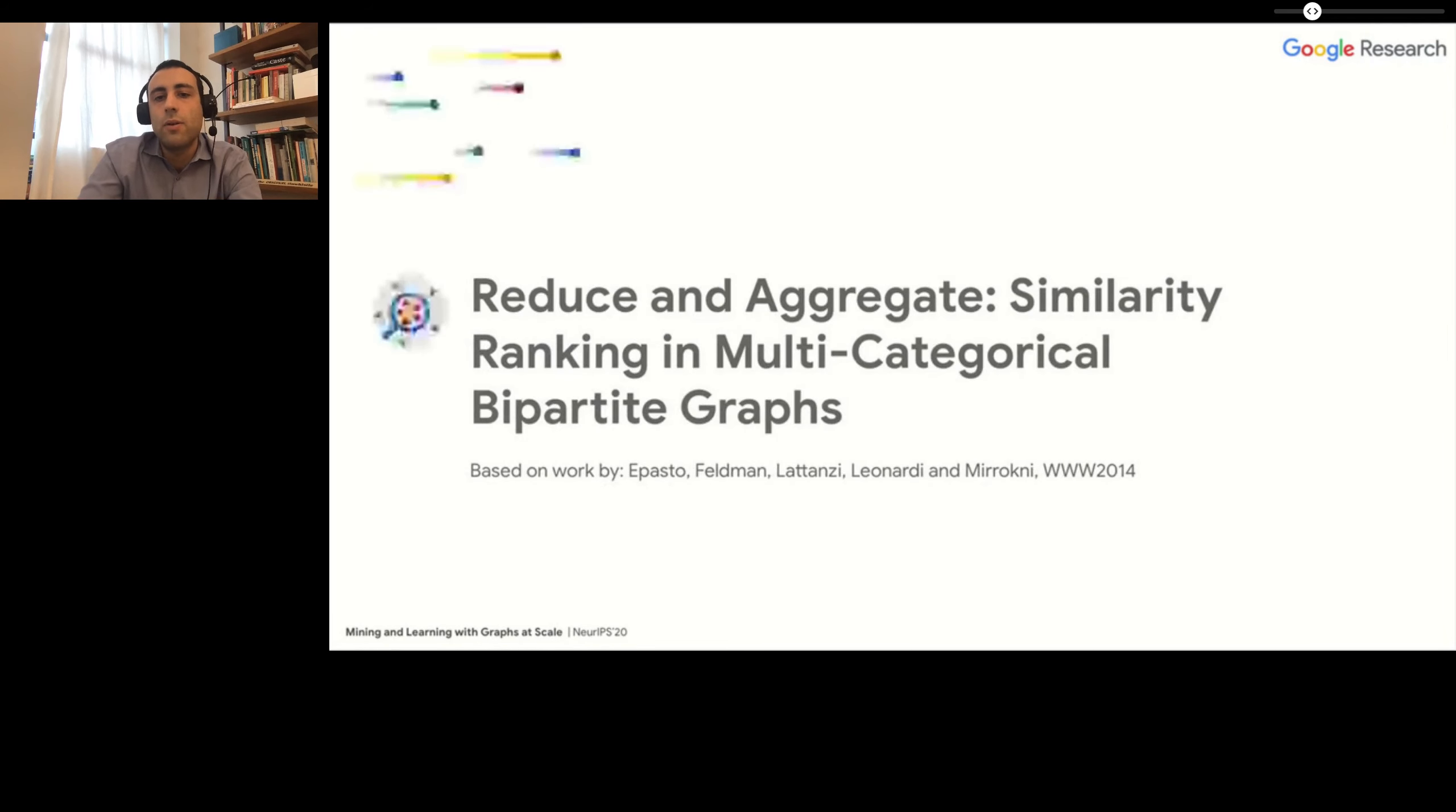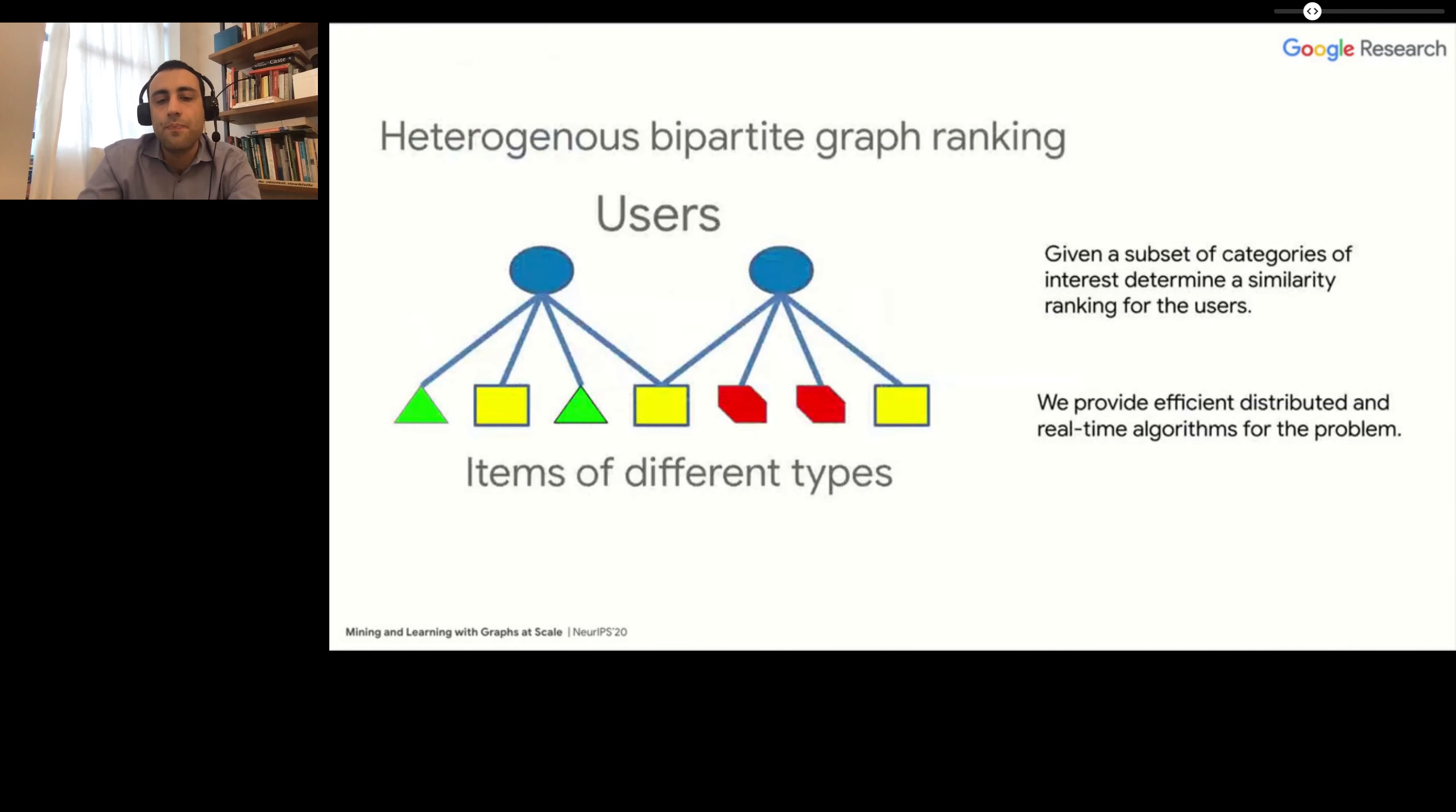Let's see, first of all, rankings in heterogeneous graphs. In this paper, we analyze a graph which is a bipartite graph, and on one side you have users, on the other side you have items for which the users are interested in. The items belong to different categories or types. The problem that we want to address is: how do you define a similarity score that takes into account the different types of items? In particular, how can you, in real time, compute a similarity ranking for users in this graph for any subset of the categories of items of interest?